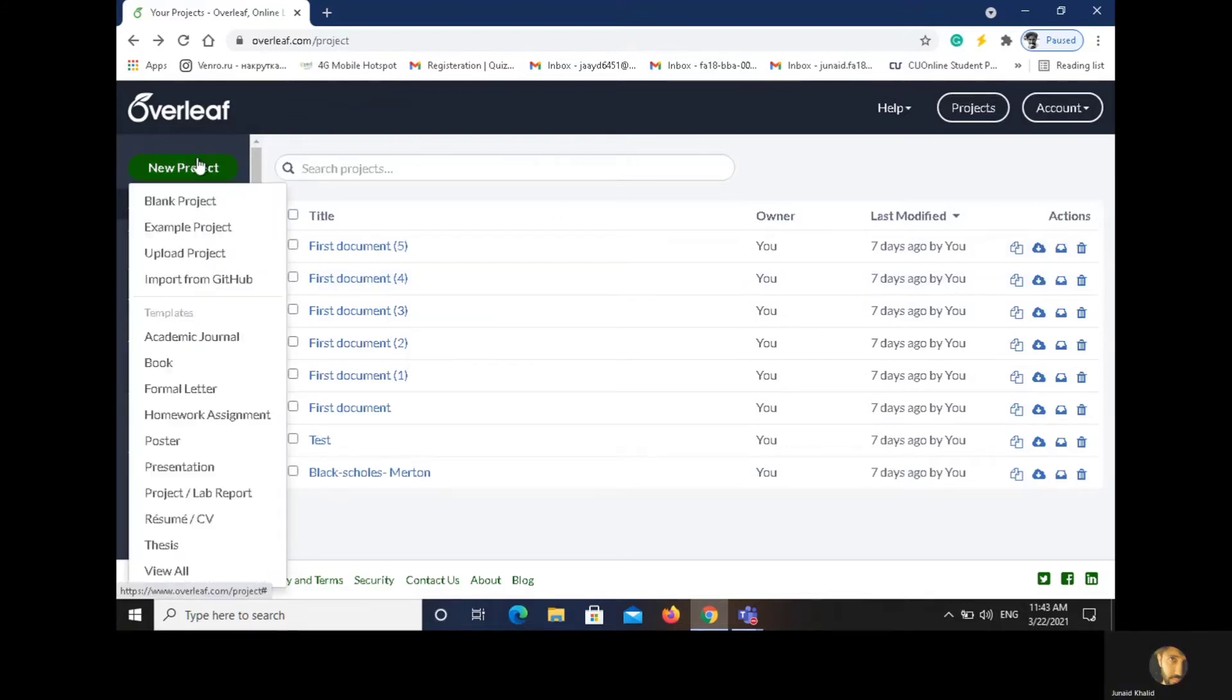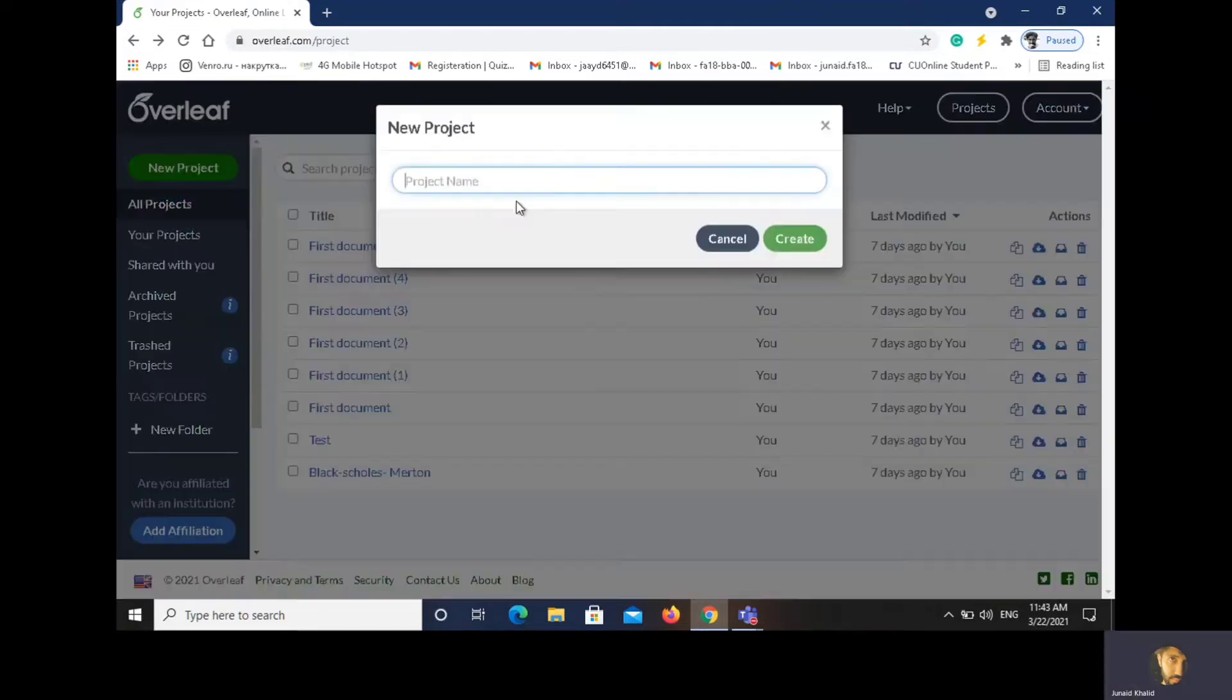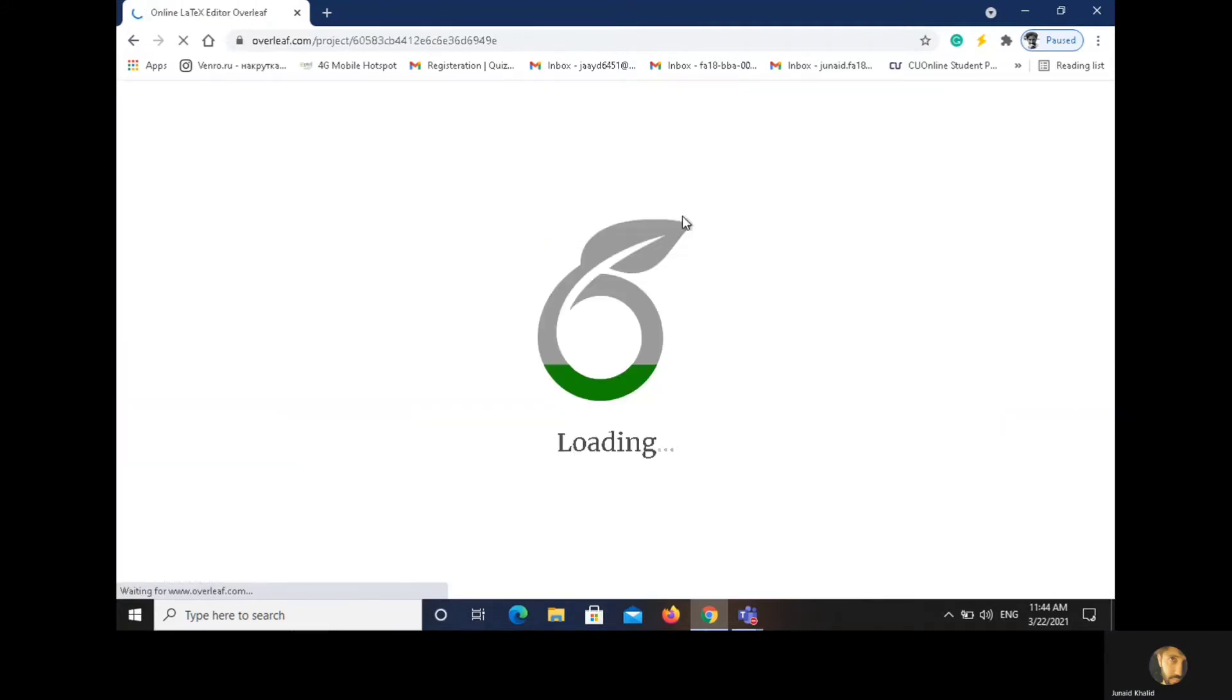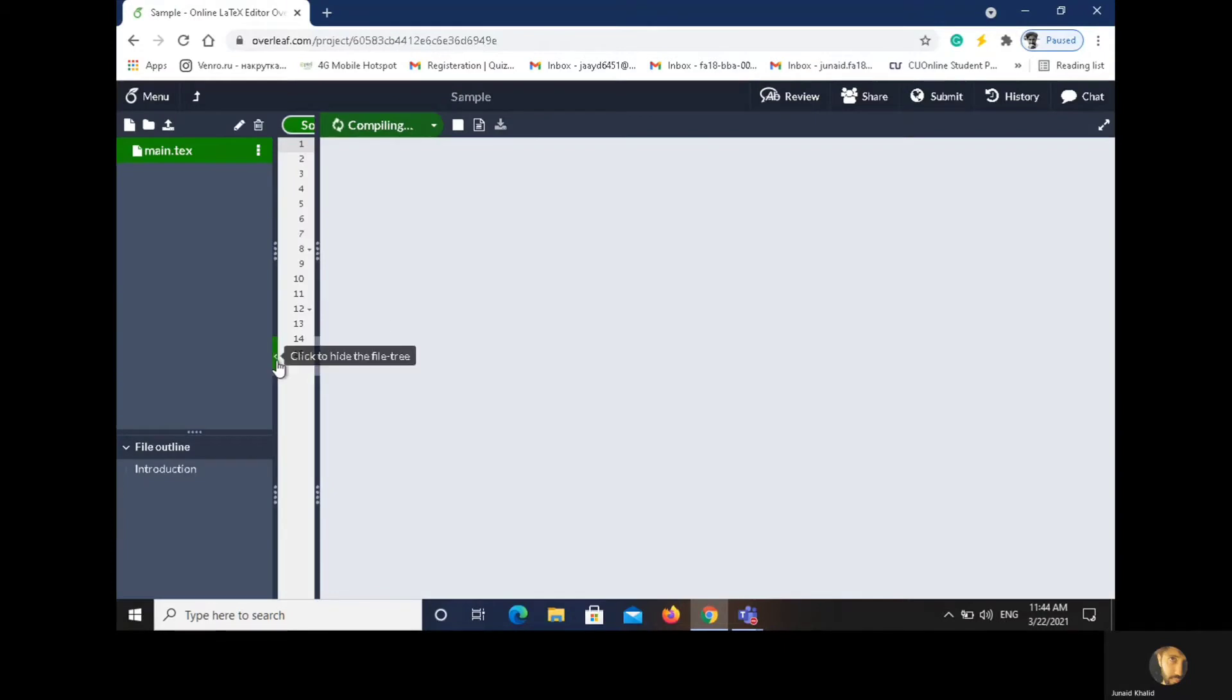So let's start a new project, blank project. Write 'sample', create. So it has been loading, created. Now you can see on the left side the source.